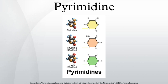Nomenclature: The nomenclature of pyrimidines is straightforward. However, like other heterocyclics, tautomeric hydroxyl groups yield complications since they exist primarily in the cyclic amide form. For example, 2-hydroxypyrimidine is more properly named 2-pyrimidone. A partial list of trivial names of various pyrimidines exists.